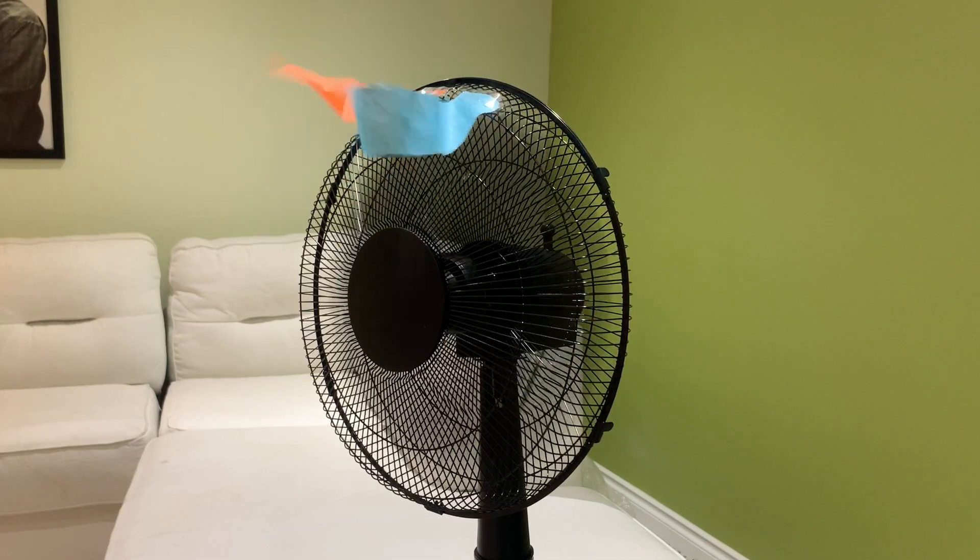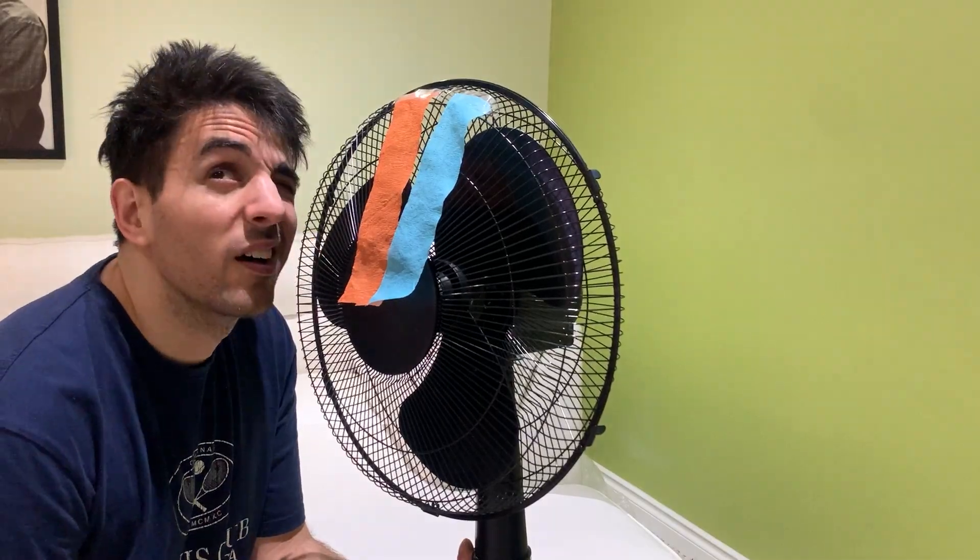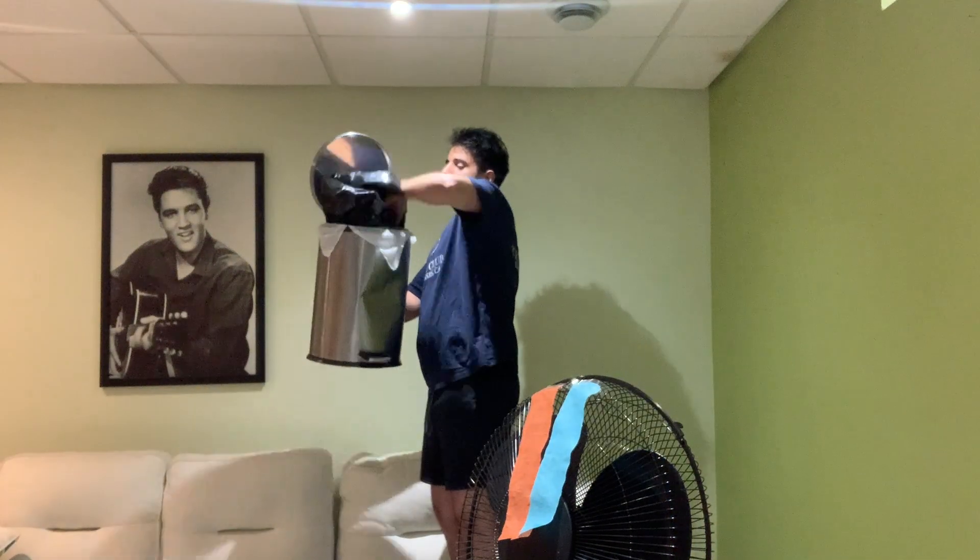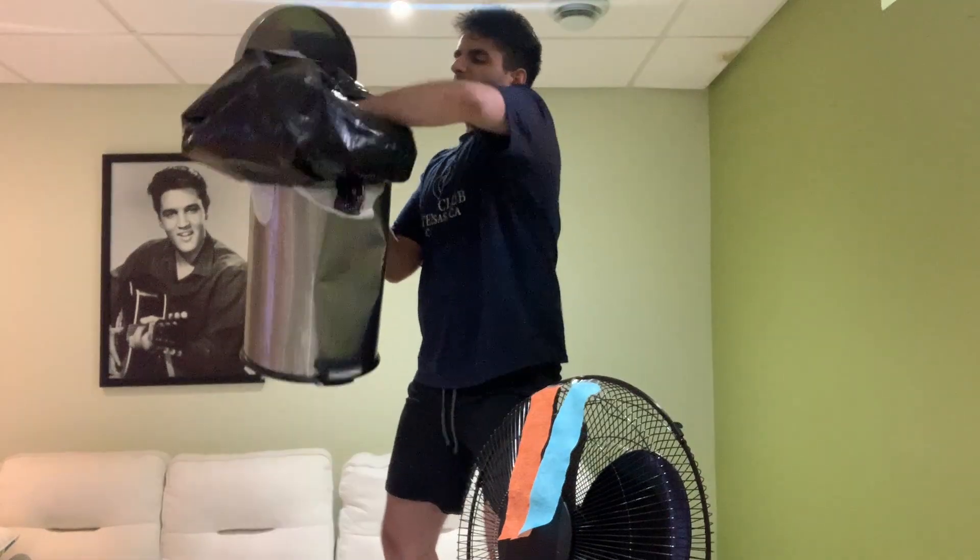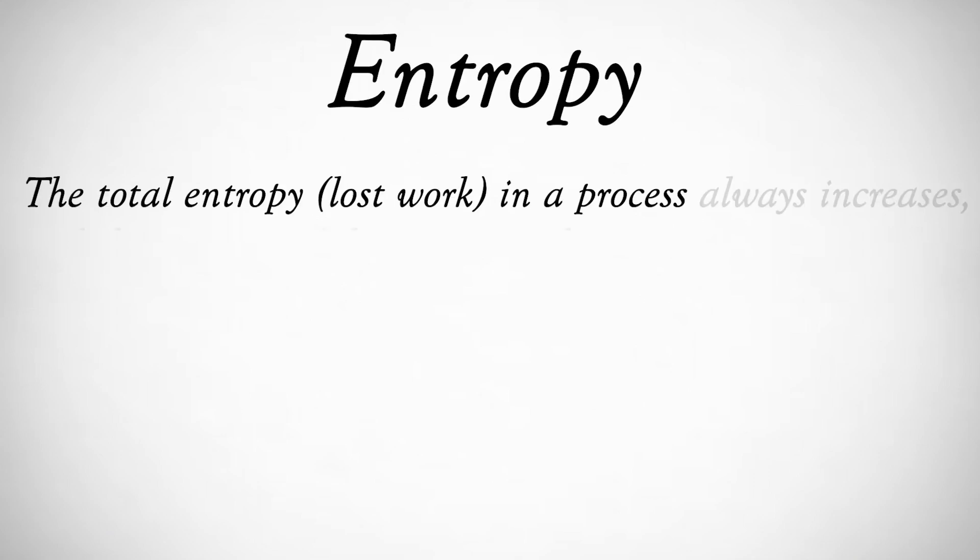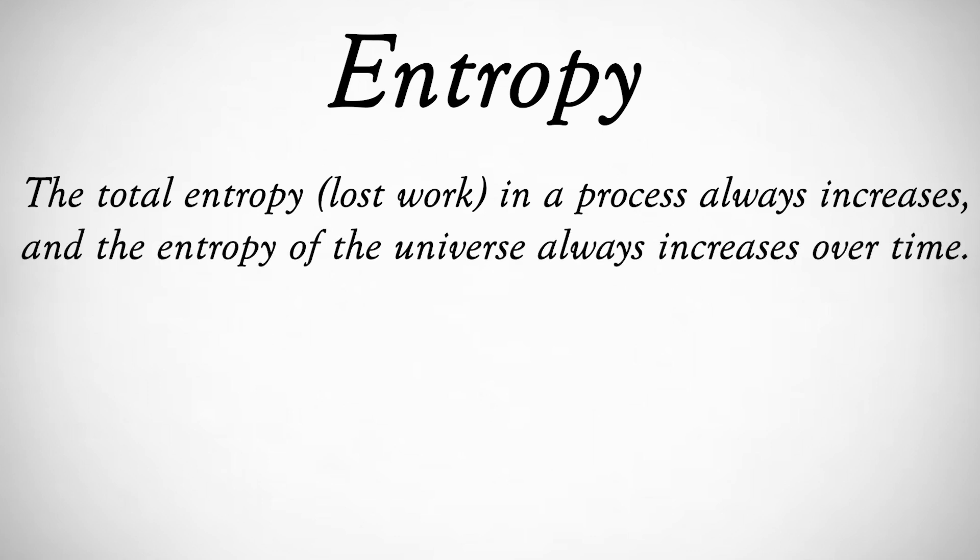The heat gained by the water cannot organize itself and spin the paddle in reverse. All the electrical energy of this fan eventually goes into heating the air. But this energy is degraded. It's not useful. It's not going to spin the fan and regenerate that electricity. It's crap. Garbage. Every time energy is converted, there's some amount of energy that is no longer available to use. This is the concept of entropy. The total entropy in a process always increases, and the entropy in the universe is always increasing over time.